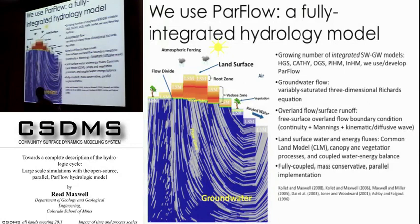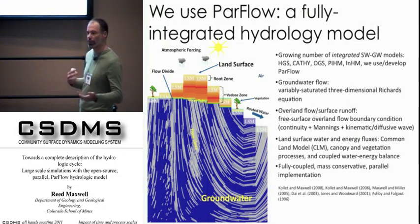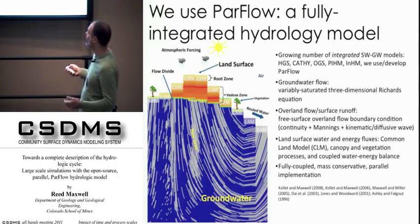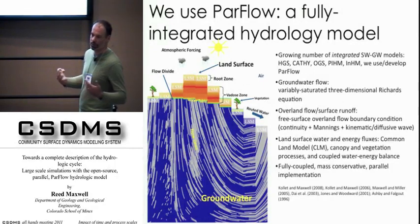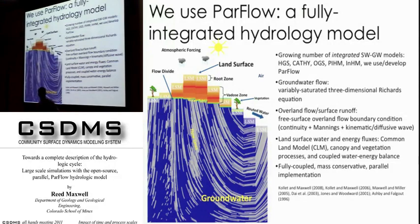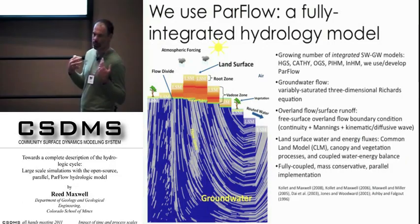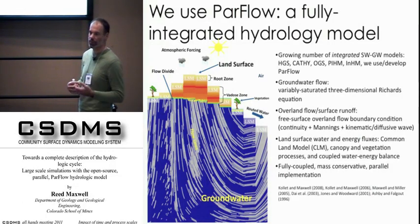What we do — and what most of these codes do — is solve the variably saturated three-dimensional Richards equation everywhere in the subsurface. We don't delineate between groundwater and vadose zone; we solve the 3D compressible Richards equation everywhere. Where geology and topography give us groundwater, we get groundwater. Coupled to that, we solve overland flow and surface runoff using continuity and Manning's equation in either kinematic or diffusive formats — a fully integrated system solving PDEs for surface and subsurface flow in a completely globally implicit fashion.